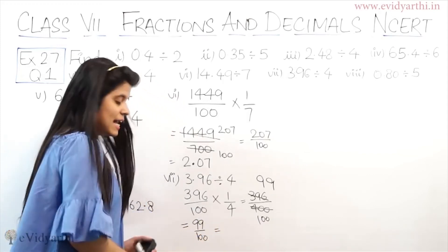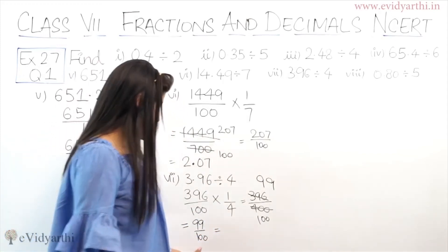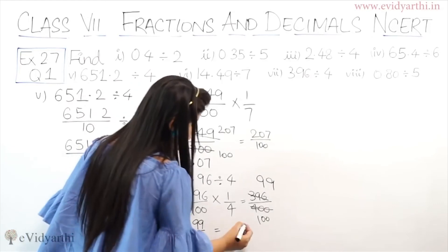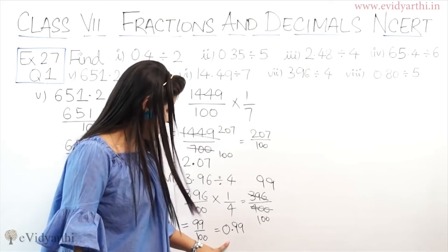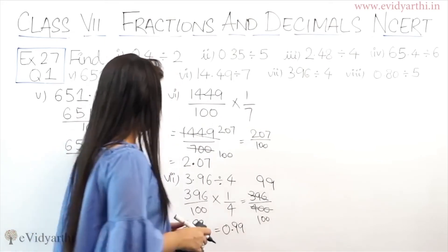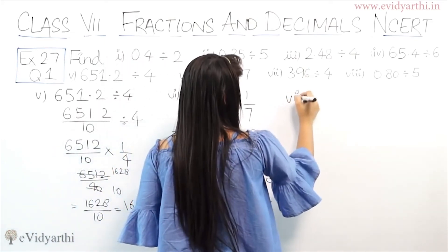100. Now here is 100, 2 zeros. Put point above, 2 digits before. So the answer will be 0.99. Now let's come to the last part.